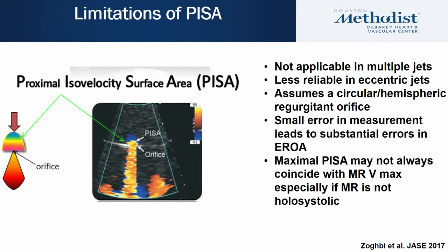Because different methods have different limitations, it's essential to incorporate multiple parameters when evaluating MR severity. Limitations of PISA include: it's not applicable with multiple jets, less reliable in eccentric jets, and it assumes a circular hemispheric regurgitant orifice. Minor errors in PISA radius measurements can lead to substantial errors in EROA. Also, maximal PISA may not coincide with MR velocity maximum, especially if MR is not holosystolic as in mitral valve prolapse.